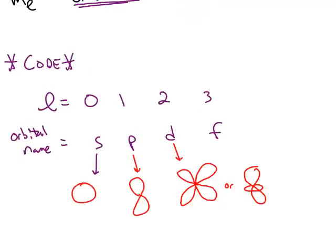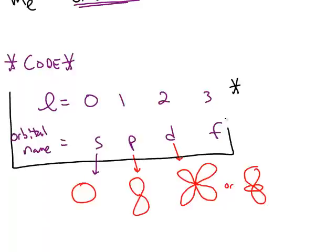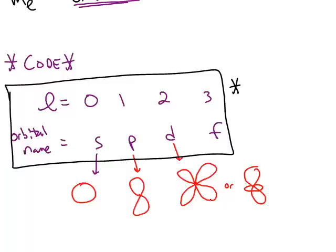It's vital that you memorize the orbital name that goes along with the quantum number l. Values 0, 1, 2, and 3 correspond to s, p, d, and f orbitals. When l is 0, it's an s orbital, which has a spherical shape. A p orbital has l equal to 1 and has a dumbbell shape. A d orbital looks like two p orbitals stuck together, or it could look like a p orbital with a donut shape around the middle. The f orbital shapes are more complicated than the d's, so you only have to worry about the shapes for s, p, and d orbitals.